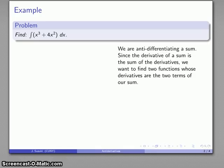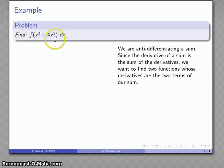First thing to note here — a little bit of analysis goes a long way. I'm anti-differentiating a sum of two terms, and thinking back through my derivative rules, the derivative of a sum is the sum of the two derivatives. So what that suggests is that if I want to find the antiderivative of a sum, I can find the sum of the antiderivatives of the two addends. Here I'm adding x cubed and 4x squared, so if I find each antiderivative separately I should find the antiderivative of the sum.